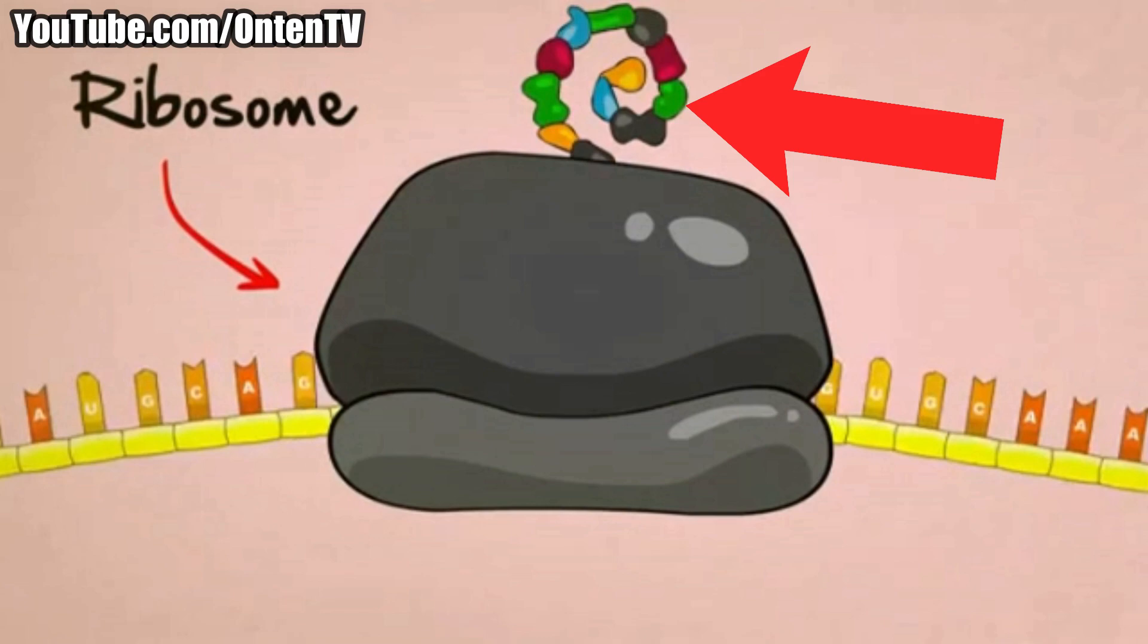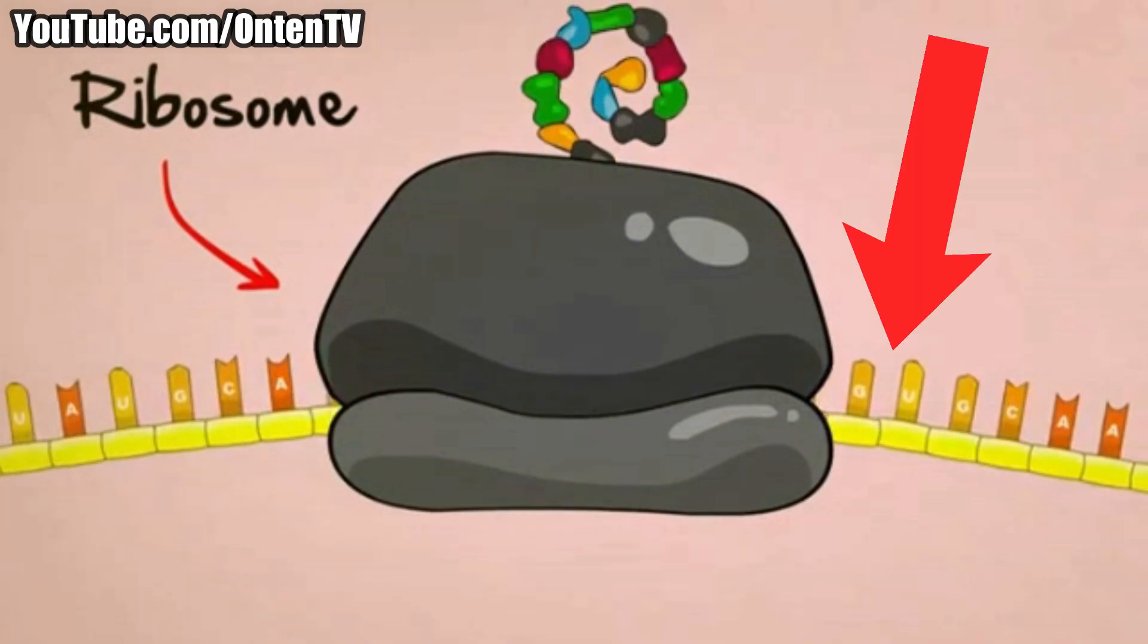You could say that RNA is the programming code, the ribosome is a 3D printer, and amino acids is like a material—kind of like plastic in 3D printing.